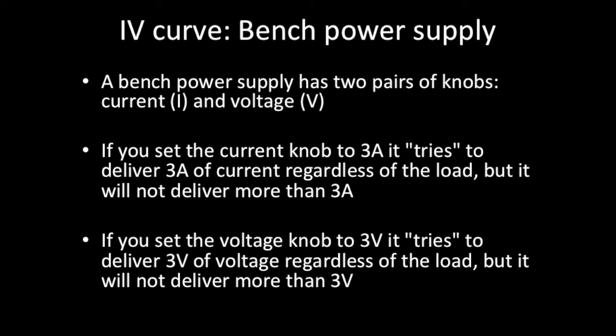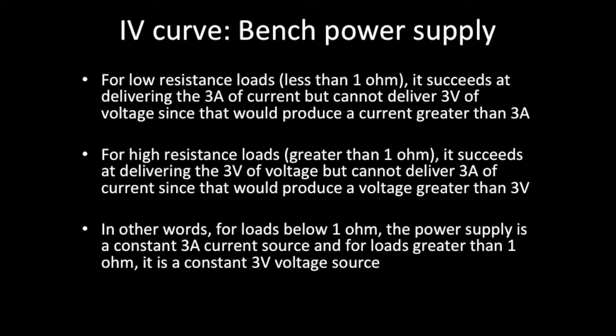So if you set the current knob to 3 amps, it basically is trying to give you 3 amps of current, regardless of the load it is, but it can't. And it will never give you more than 3 amps, because that's what it's set to. And so then if you set the voltage, and if you set the voltage knob to 3 volts, it tries to give you 3 volts of voltage, regardless of the load, but it will never give you more than 3 volts. So what that means is that for low resistance loads, less than an ohm, it's going to succeed at giving you the 3 amps of current, but it cannot deliver you the 3 volts of voltage, since that would produce a current greater than 3 amps, and you've set the current knob to 3 amps. High resistance loads, it's the opposite of that. It succeeds at giving you the 3 volts, but it can't give you 3 amps, because that would give you a voltage greater than 3 volts, and that's its max. So another way to say this is for loads below an ohm. When it's set to 3 amps and 3 volts, it's a constant 3 amp current source, and for loads greater than 1 ohm, it's a constant 3 volt voltage source.